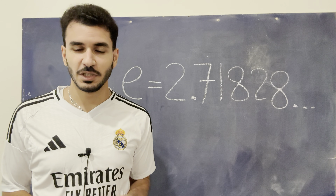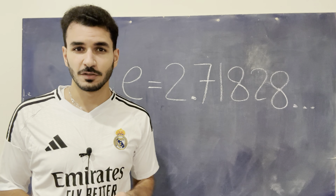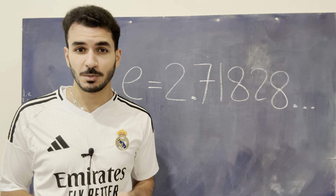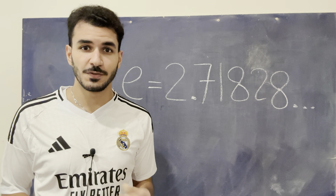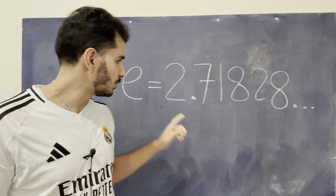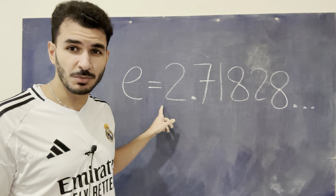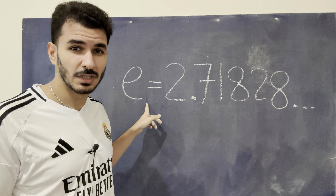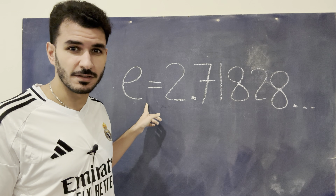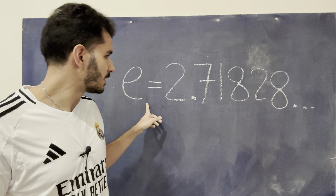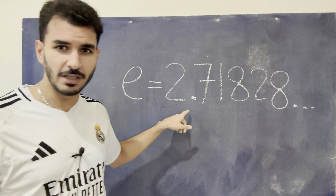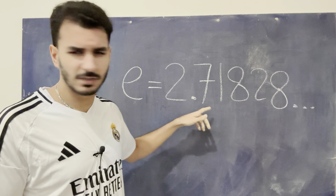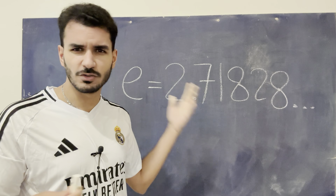Hey guys, my name is Ali Al-Karghouli. I am a post-doctoral fellow at the NASA Jet Propulsion Lab. In this video, I'm going to explain to you this number E, where it came from, why it even exists, why it's important, and why it is equal to 2.71828.